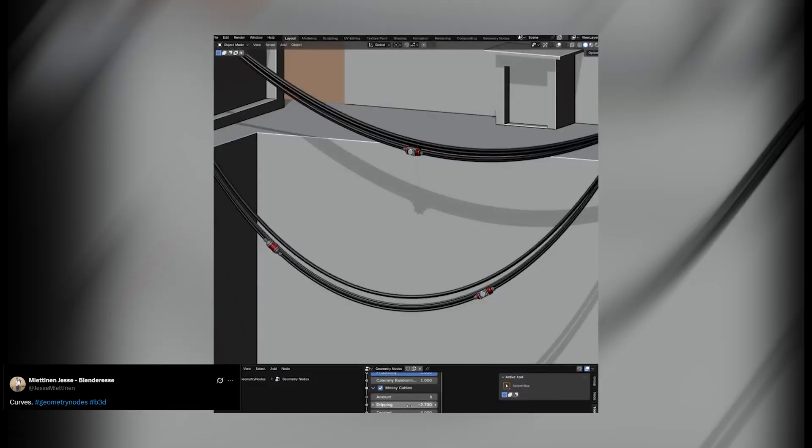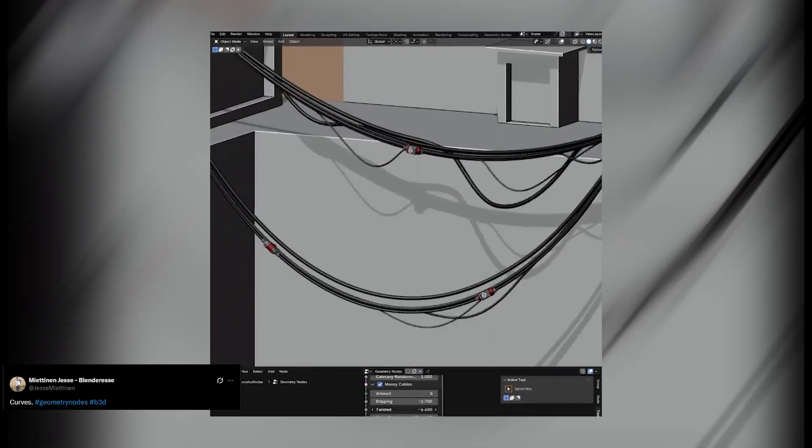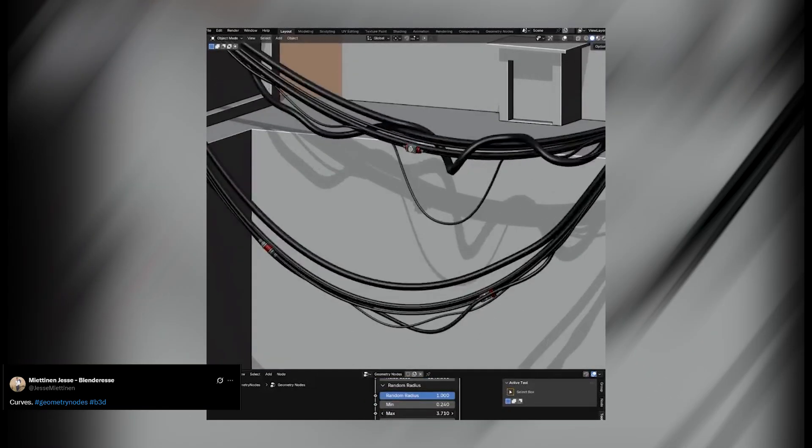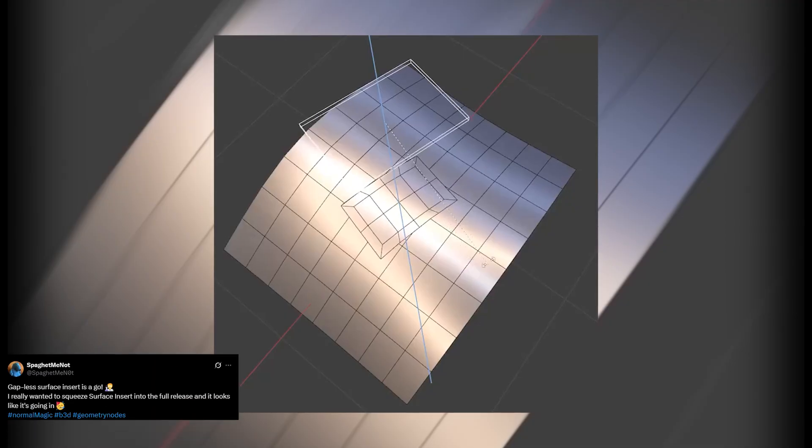And look, I know you already know Geometry Nodes is powerful. I just needed an excuse to show you what happens when someone who really knows the system goes crazy with it. Making cables hang is easy. Making them hang correctly without intersections is a whole different level. Another wild thing, merging objects without Booleans.